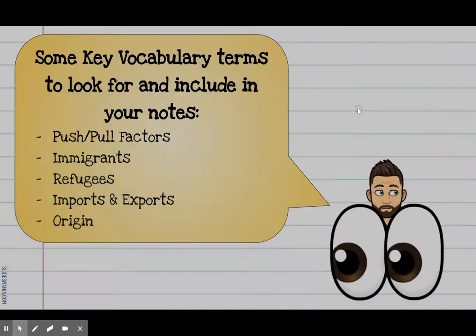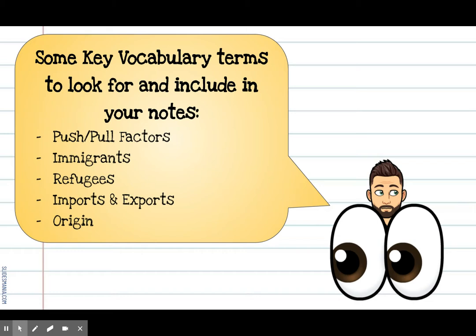The last thing I'd like to share before we move forward are some key vocabulary terms to keep your eyes peeled for throughout the presentation. I would highly suggest that you include these five important vocabulary terms in your own notes. Those terms are going to be push and pull factors, immigrants, refugees, imports and exports, and finally the term origin. When you see them, I would suggest pausing your video and including those terms in your notes.